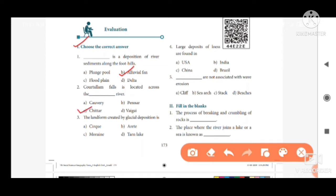Then third one, the land form created by glacier deposition is option A, cirque. Option B, arête. Option C, moraine. Option D, tarn lake. Option C is the correct answer, moraine.